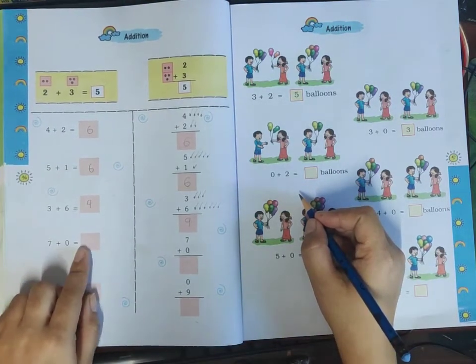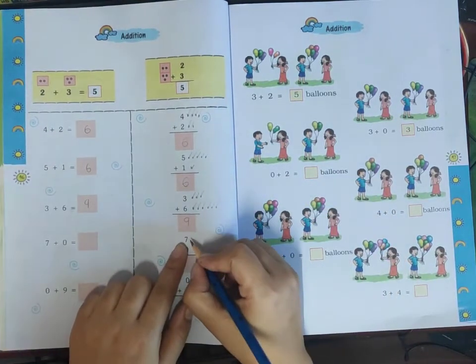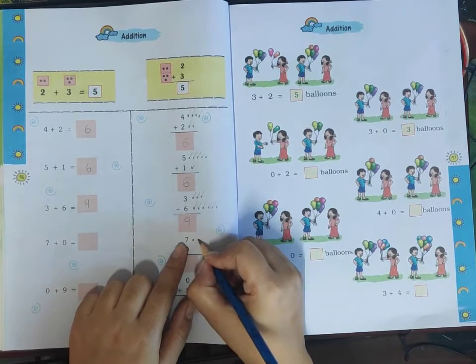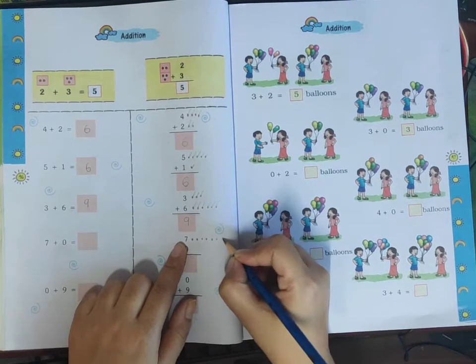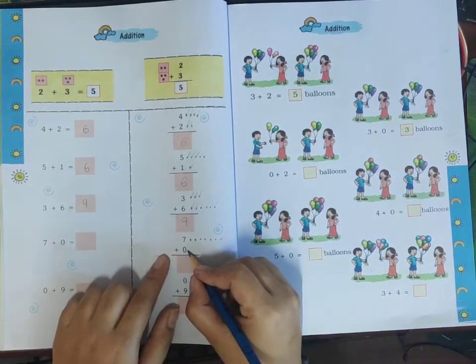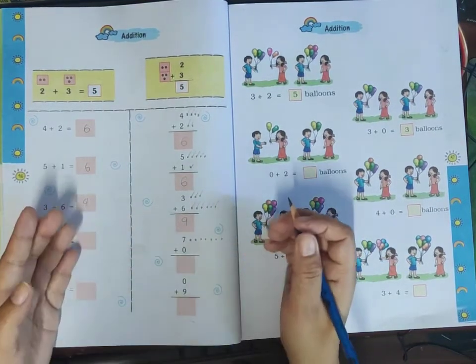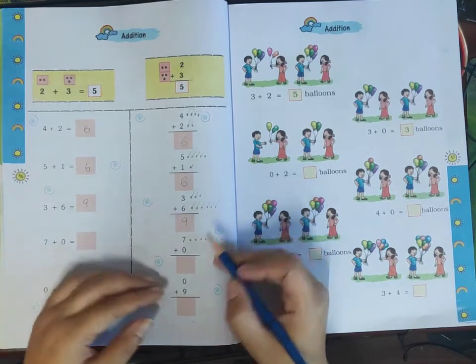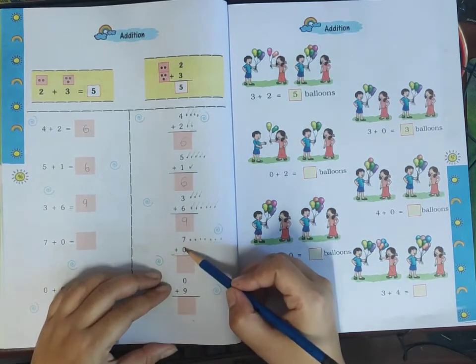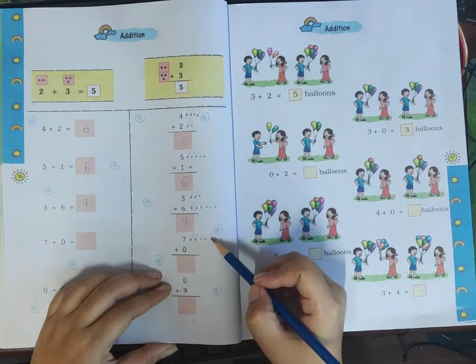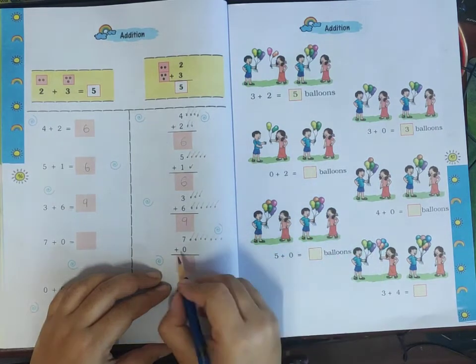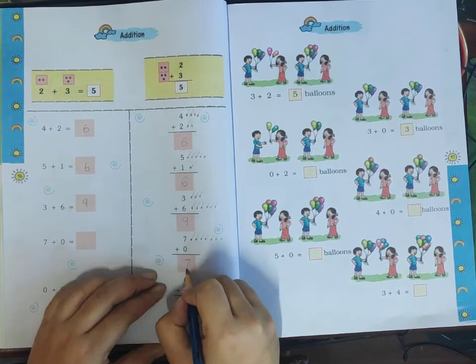Seven plus zero. Here we have seven. Let me count the dots: one, two, three, four, five, six, seven. Zero means there are no additional dots to add, so the answer remains seven. Seven plus zero equals seven.